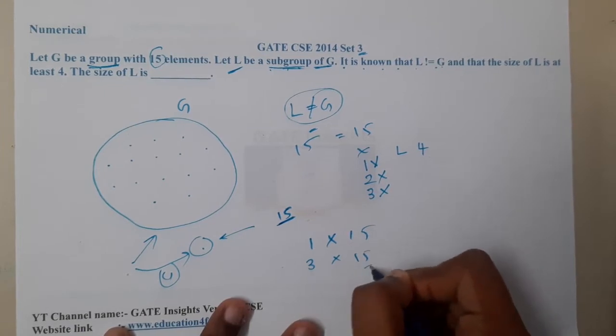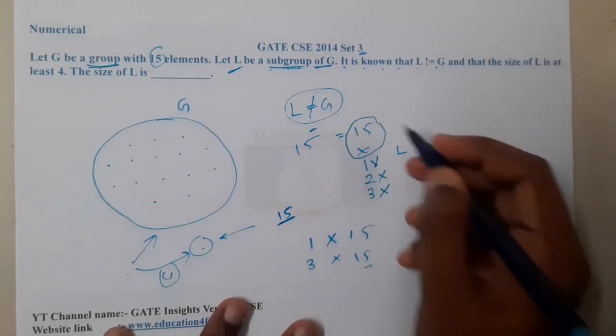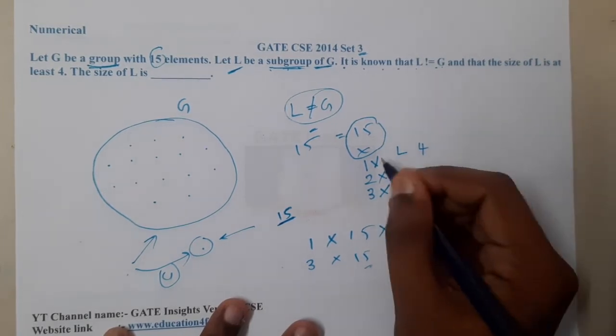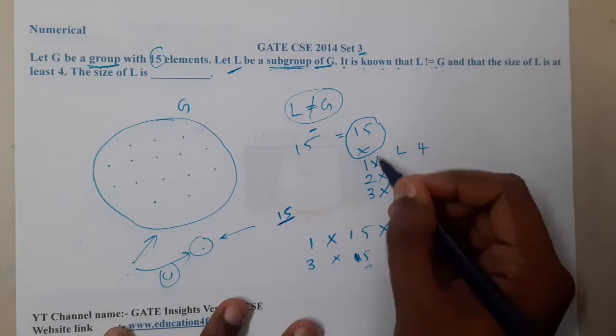What are the different combinations to get 15? 1 times 15, and 3 times 5. Is there any other option? No. In our question, they clearly said that 15 is not possible, hence you can strike off 15. Similarly, 3 times 5.